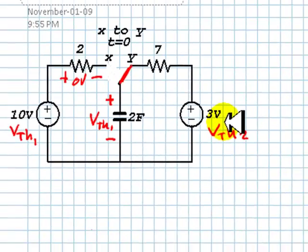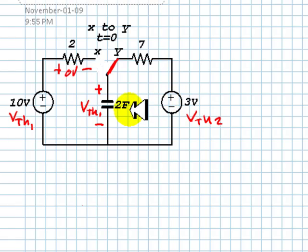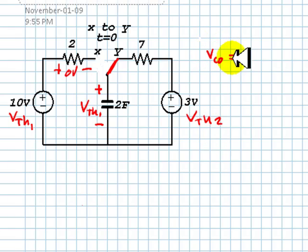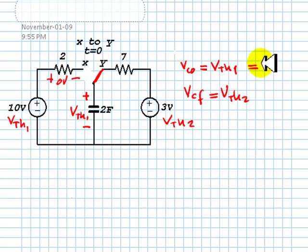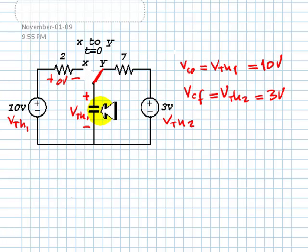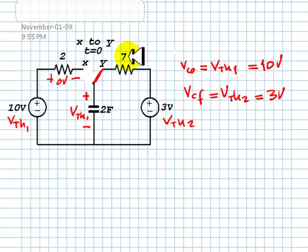The voltage across the Thevenin resistor will be 0 and the voltage in the capacitor will be just Vth2, 3 volts. In short, the final voltage of this capacitor is 3 volts — it's Vth2. Vc0, the initial voltage of the capacitor, is Vth1. And VcF, the final voltage of the capacitor, is Vth2. This is 10 volts and this is 3 volts. The voltage in the capacitor will start at 10 volts and drift towards 3 volts. How quickly? Depends on the time constant RC.